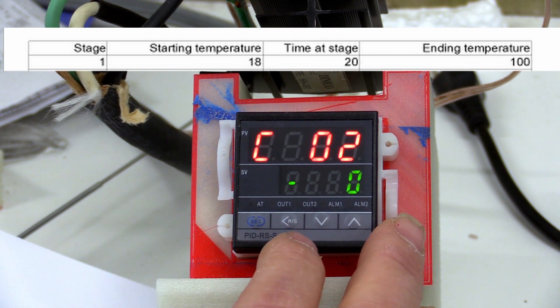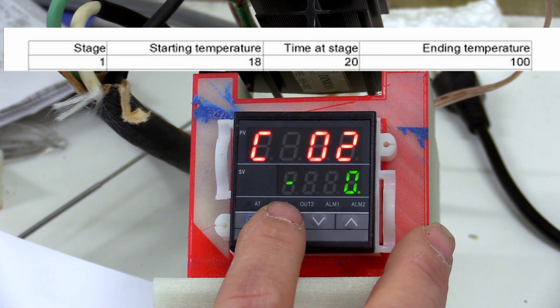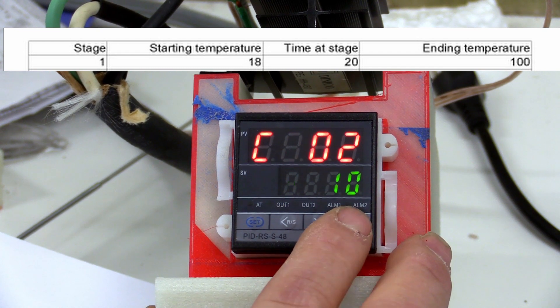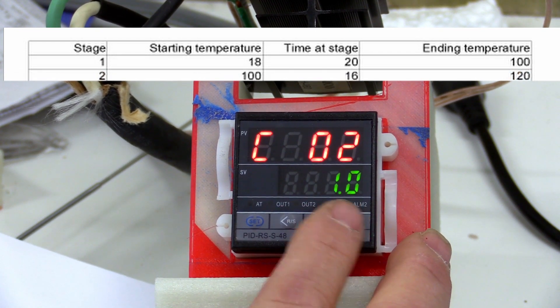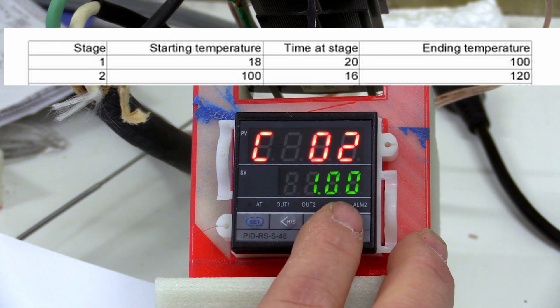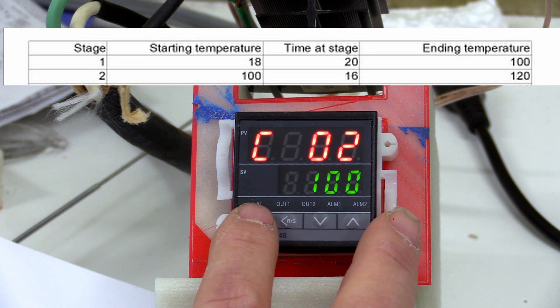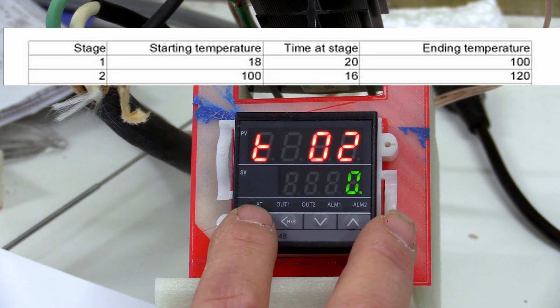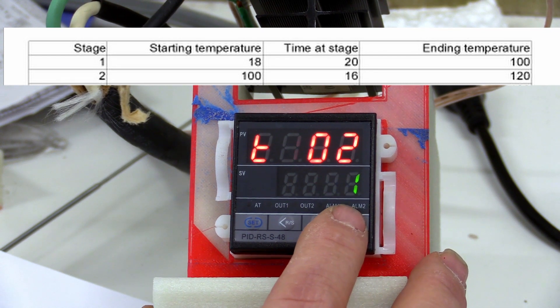Now you will see C02. Remember, C is centigrade, and this is the starting temperature of stage 2, which was also the ending temperature of stage 1. Enter 100 degrees and press set. Next is the time we want to spend at this stage. Enter 16, press set.